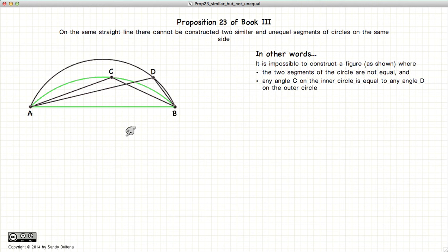Having stated that, this proposition states that if we have a given line segment AB, we cannot have two unequal circle segments which are similar. So in other words, C and D cannot be equal, because that would imply these two segments of circles are similar. And we're trying to prove that they're not.